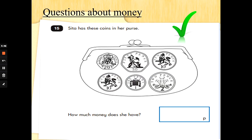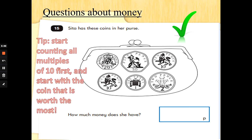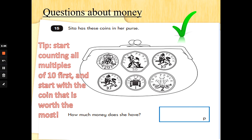Number 15. Sita has these coins in her purse. How much money does she have? Now don't panic, boys and girls. Don't panic. My first top tip for you is to find the coin that is worth the most first. And then start by counting all the multiples of 10. All of the coins are ending a zero and you know are in the 10 times table. So let's find the coin that is worth the most.